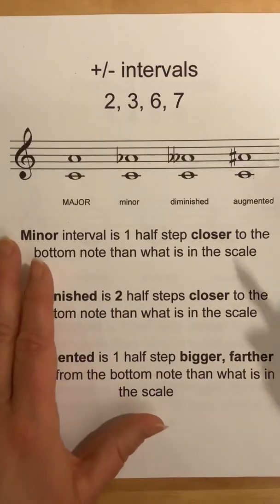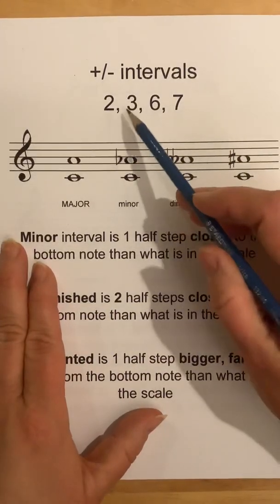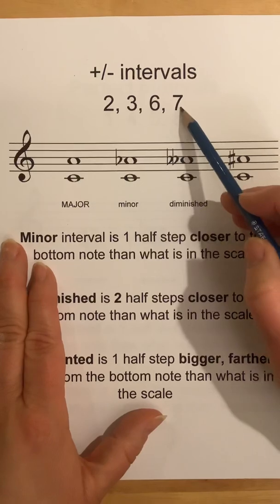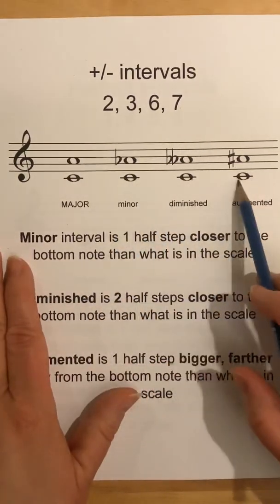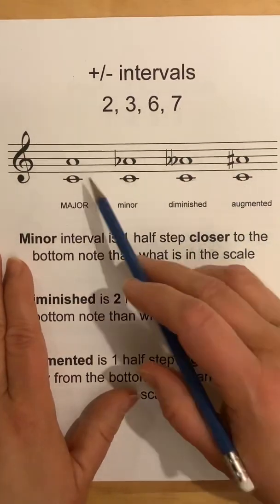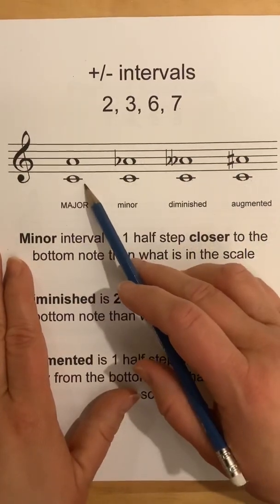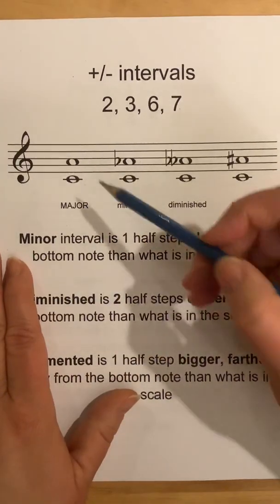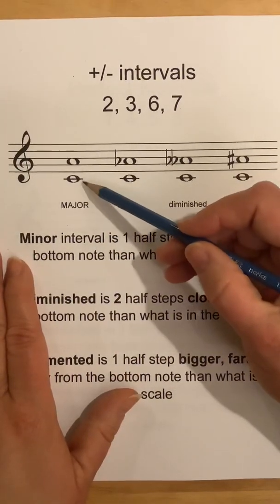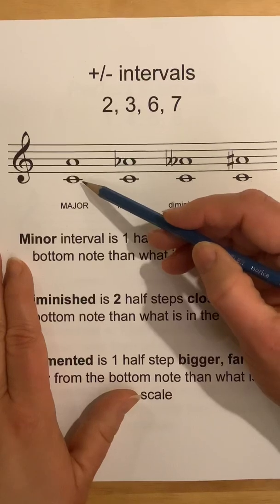Our major and minor intervals are twos, thirds, sixths, and sevenths. I chose to start with a C on the bottom, because as we know, we think in the scale of the bottom note, so we can think in C — no sharps, no flats — makes it easy. And I decided to work with a sixth.